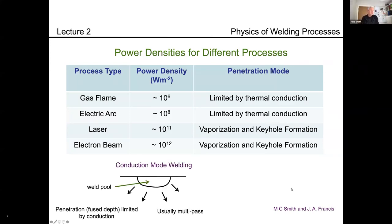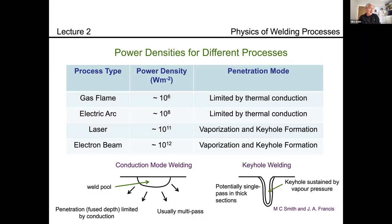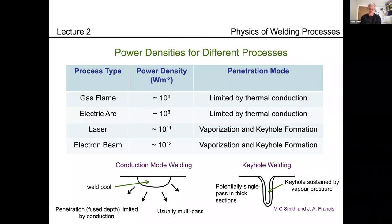Here's a picture of what we call conduction mode welding. The fused depth — the amount you melt — is determined effectively by thermal conduction, although convection in the weld pool affects its shape quite significantly. The converse is keyhole welding, where you've generated a hole all the way through, sustained by the vapor pressure of the metal you've vaporized due to the very high energy density. You can see there are two very different shapes of weld produced, as we saw in the electron beam weld introduction yesterday.